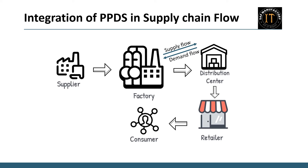Subsequently, plan orders are converted into production orders, which are then handed over to the production execution team. Once manufactured, products are dispatched to DCs, becoming available for sale. Retailers or wholesale distributors serve as the end customers, and consumers like us purchase products from these retailers. This summarizes a brief overview of the supply chain process and illustrates where PPDS functionalities strategically fit within this flow.